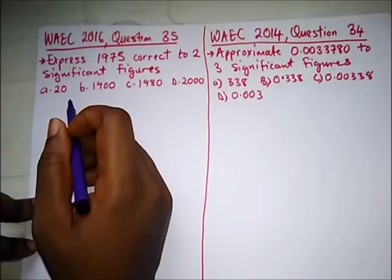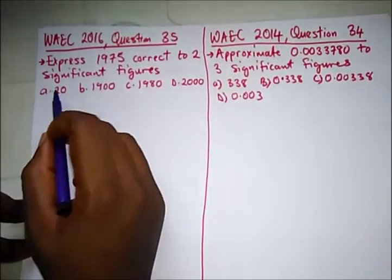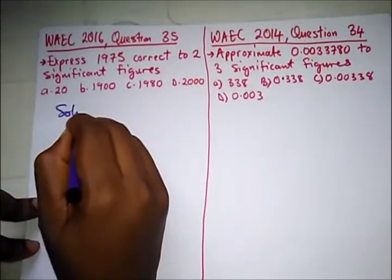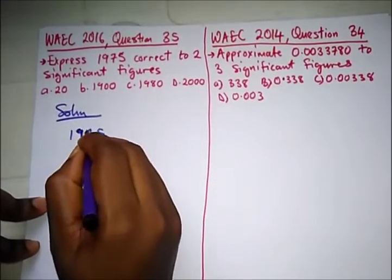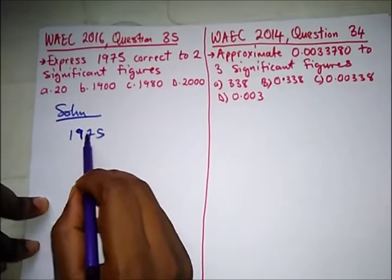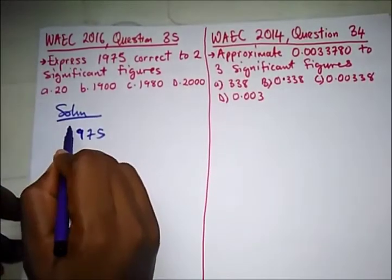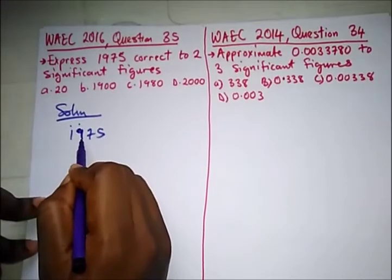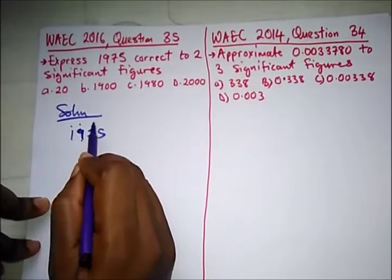Now here we have this question from WAEC 2016 question 35. It says: express 1975 correct to two significant figures. As earlier said in our introduction, in significant figures what we'll do, since it's two significant figures, we'll count one, two. Then what's the next number following the second? The second number is seven.